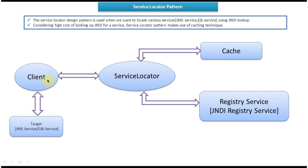The first component is Client and the second one is Target. Target is nothing but Business Service Objects. Examples of Business Service Objects are JMS Service or EJB Service. The third component is Service Locator, the fourth is Cache, and the fifth is Registry Service.